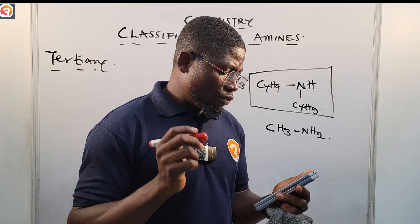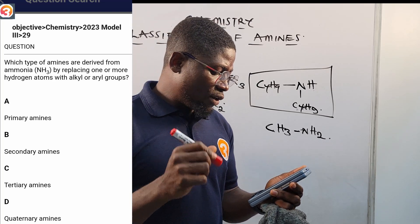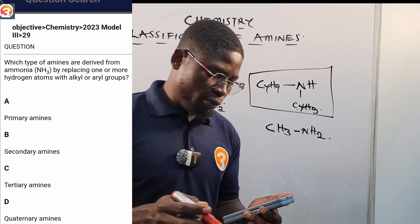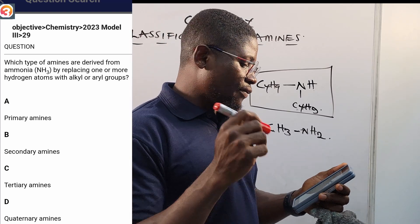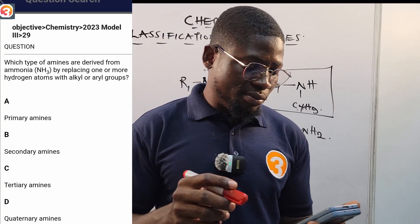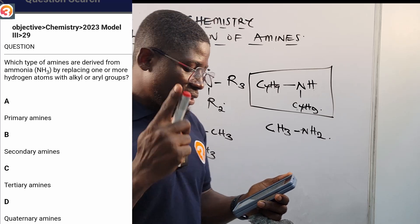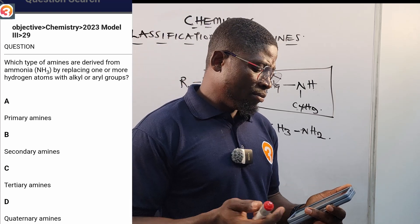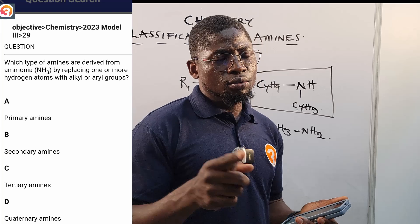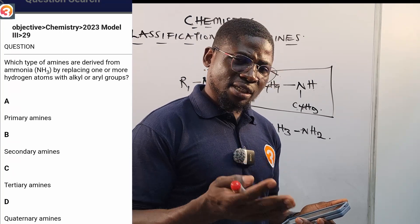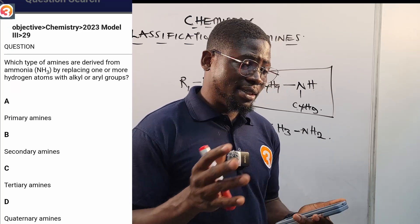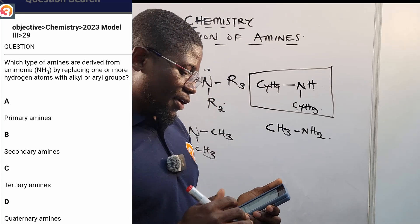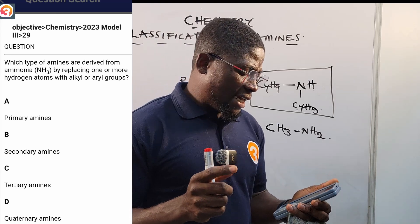For 2023 question 29: 'Which type of amines are derived from ammonia by replacing one or more hydrogen atoms with alkyl or aryl groups?' The options are A: primary amines, B: secondary amines, C: tertiary amines, D: contemporary amines. The question likely intended 'one' rather than 'one or more,' since there's no single term for one or more. The correct answer is A: primary amines — when one hydrogen atom is replaced by an alkyl or aryl group.